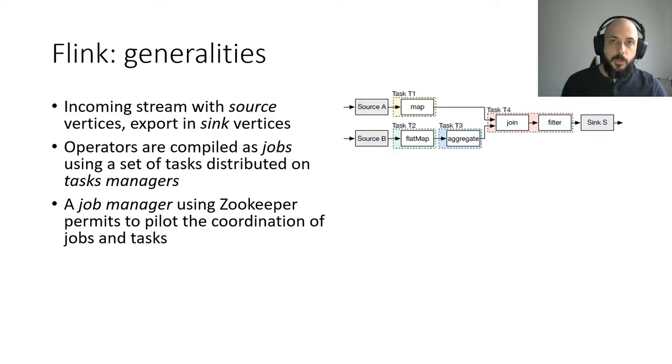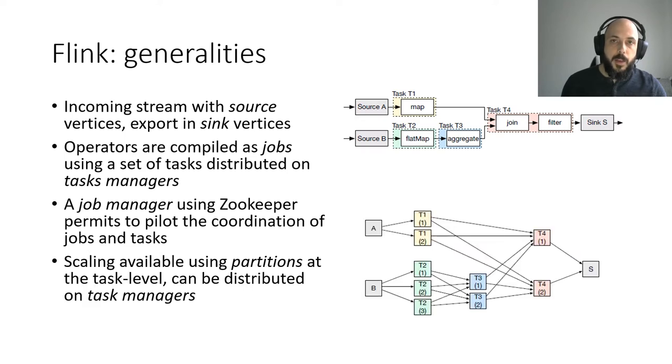We focus first on describing Flink's architecture. As we have seen before, a workflow is composed of tasks, with the incoming data in source and the outgoing in sinks. Jobs are the instantiation of the workflows. Their tasks are distributed to task managers. Events transit from one task to the next following the graph. A job manager using ZooKeeper permits to pilot the coordination of jobs and tasks. It is possible to scale tasks by using disjoint partitions.